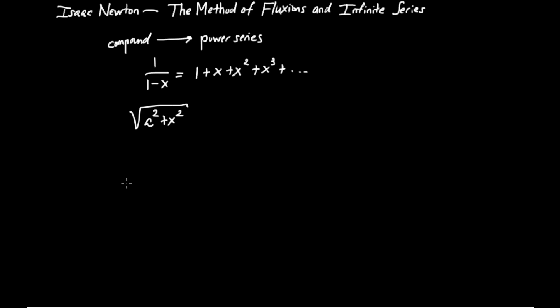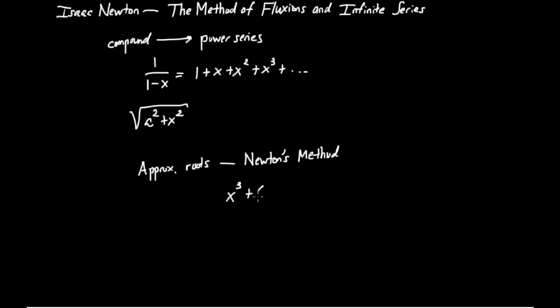In this video, we're going to continue with a bit more computation and talk about how Newton approximates the roots to polynomial equations. Nowadays, this technique is very well known to calculus students, which is called Newton's Method. This is the method we use to approximate roots to polynomial equations — for instance, if we had a polynomial equation like x cubed plus 6x minus 1 equals 0, Newton's Method might allow you to approximate a solution.